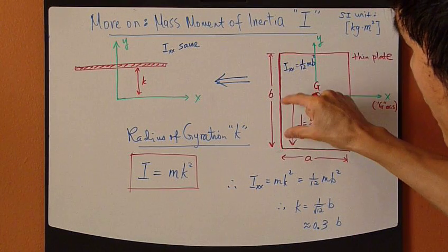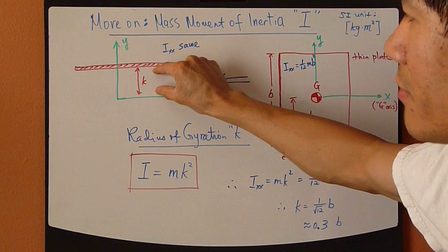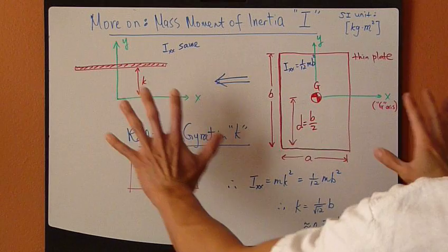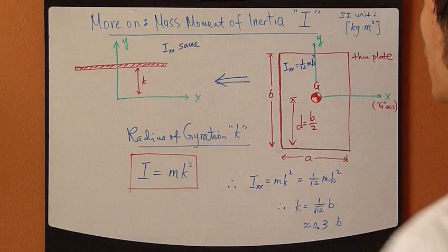So take the height and take one-third of it, that's about the distance of K. So that's what K means. These two cases, they're equivalent. They have the same moment of inertia.